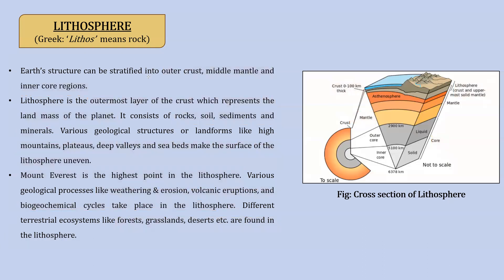This is an introduction to lithosphere. Lithosphere consists of the outer crust and some layers of the mantle. Its composition includes rocks, soil, sediments, and minerals. Our lithosphere is uneven because of various landforms and geological structures. The highest point is Mount Everest. Processes that occur in lithosphere include weathering, erosion, volcanic eruptions, and biogeochemical cycles.